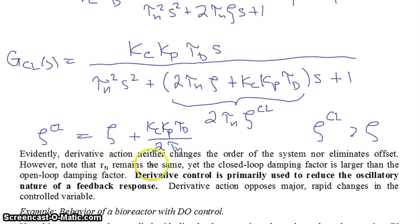However, you must note that tau n remains the same, so we have the same tau n, the same thing multiplying our s squared term, but the closed loop damping factor, zeta closed loop, is greater than the open loop damping factor. In other words, what derivative control is primarily used for is to reduce the oscillatory nature of a feedback response. Derivative action opposes major rapid changes in the closed variable, and therefore what derivative action does is reduces or dampens oscillations.